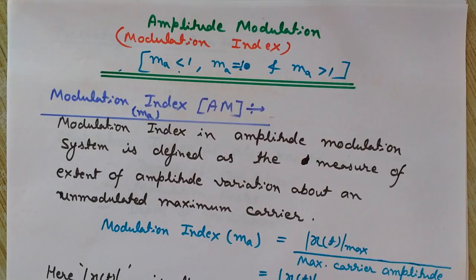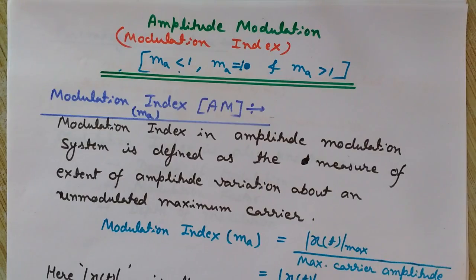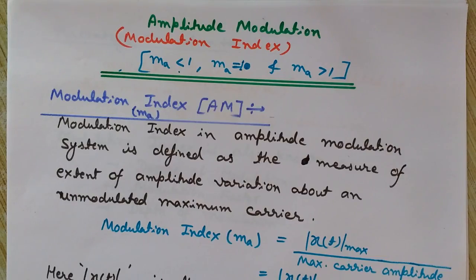Let's first define what amplitude modulation is. Amplitude modulation is a type of modulation where the amplitude of the carrier wave is varied as per the instantaneous value of the amplitude of the message signal. So in amplitude modulation, the information is contained in the amplitude variations of the carrier wave.